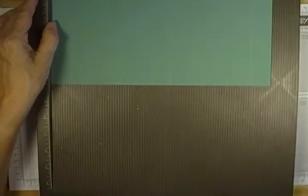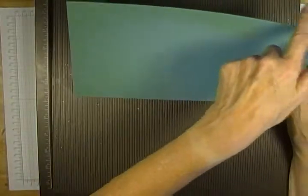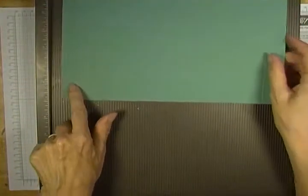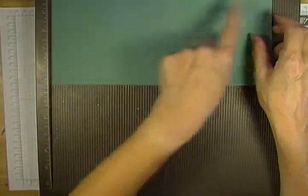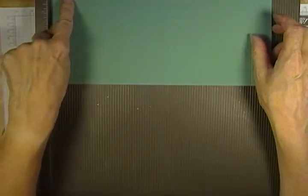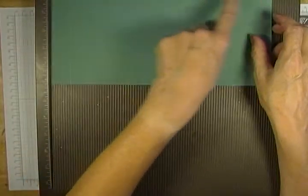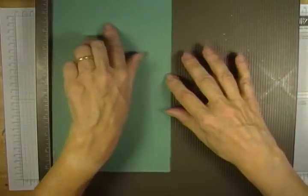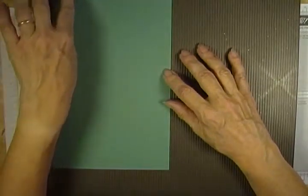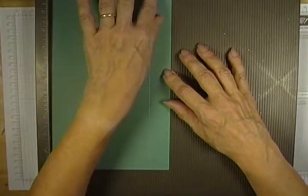So we're going to start with one of Stampin' Up's new in colours, this is Lost Lagoon, and it measures 11 by 6. I've scored it along the 11 inch side at 1, 5, 6 and 10, and then on the 6 inch side I've scored it at 1 and 5 inches.